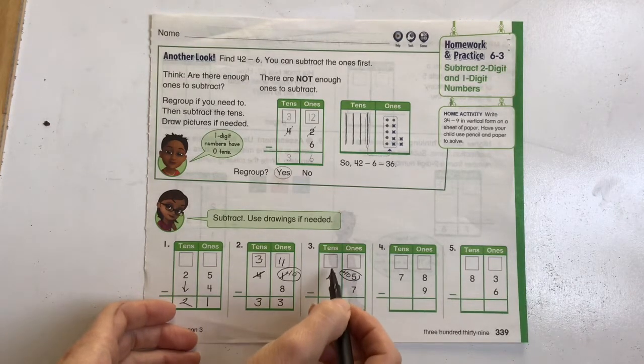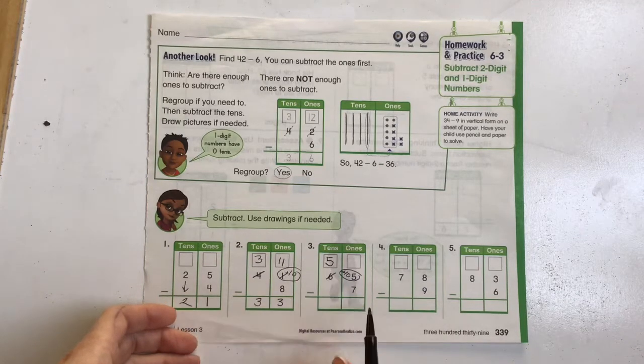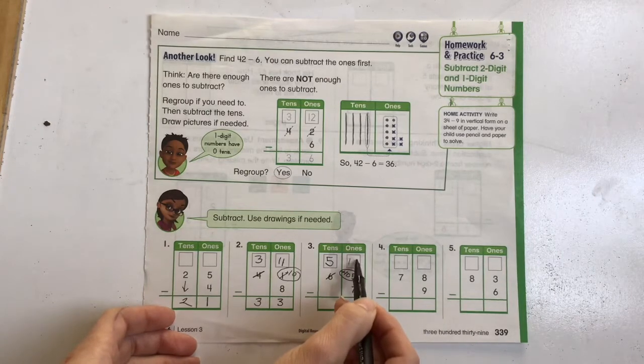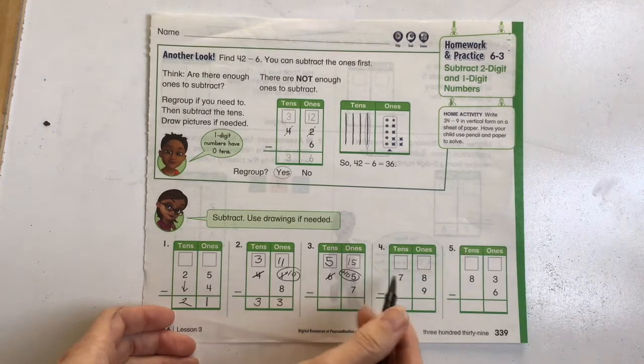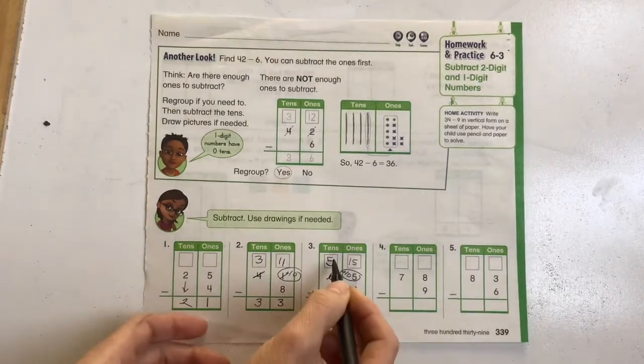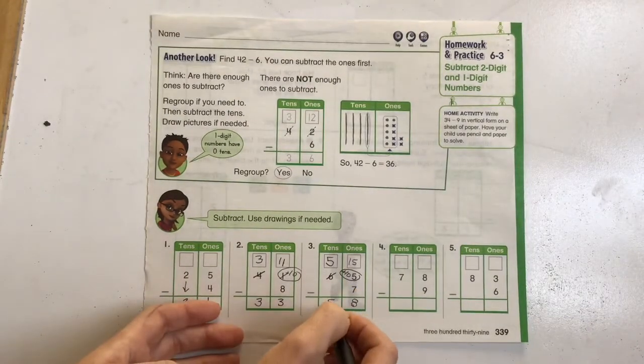So we're going to have 6 minus 1 group of 10 is 5 groups of 10. And then 10 plus 5 becomes 15. 15 minus 7 is 8, and we're just dropping that 5 straight down.